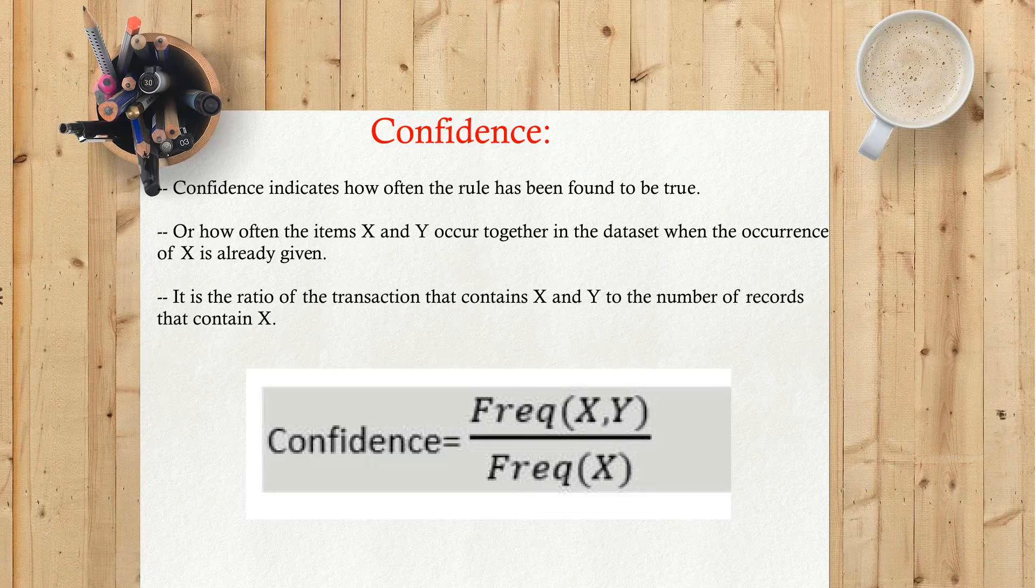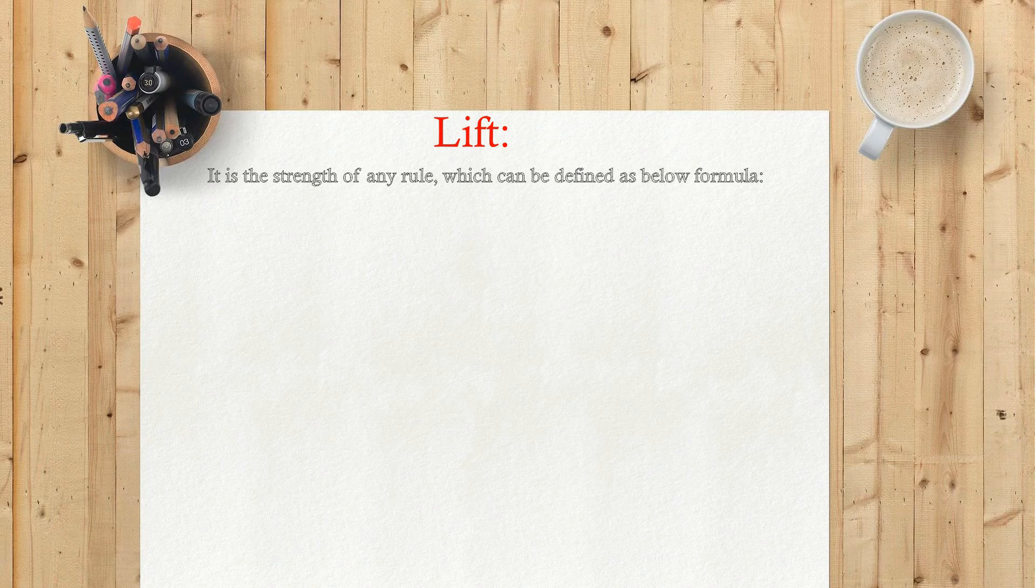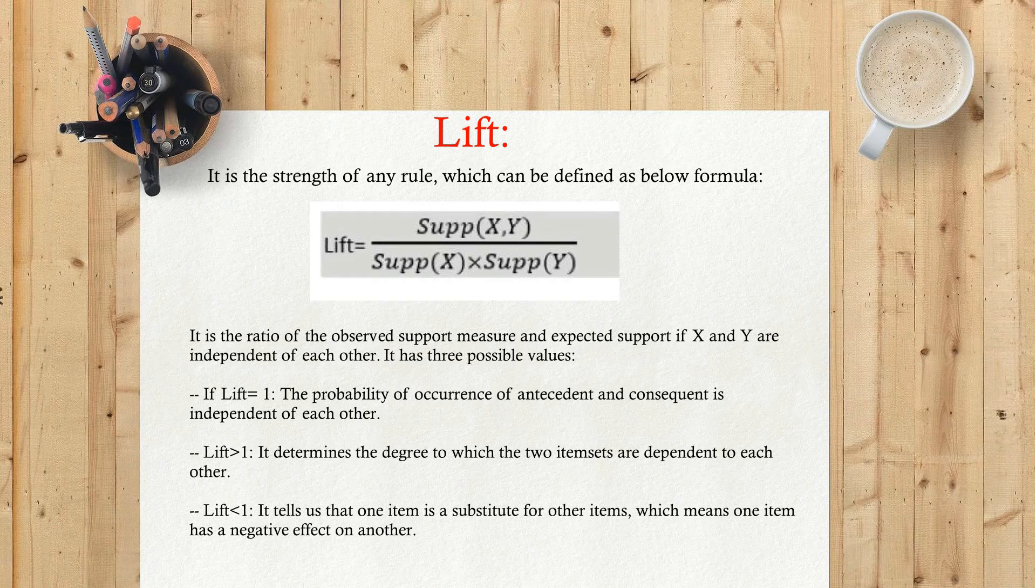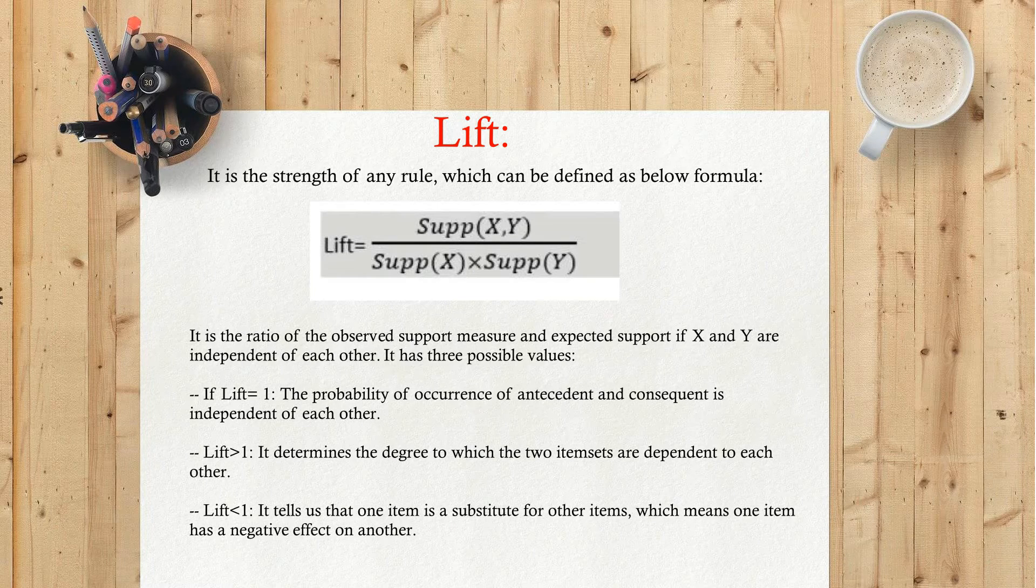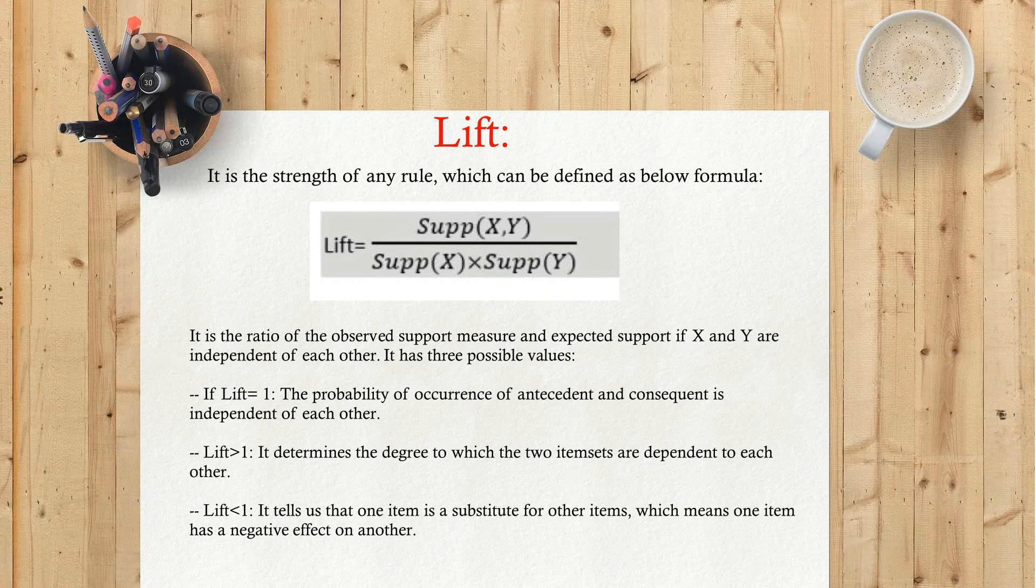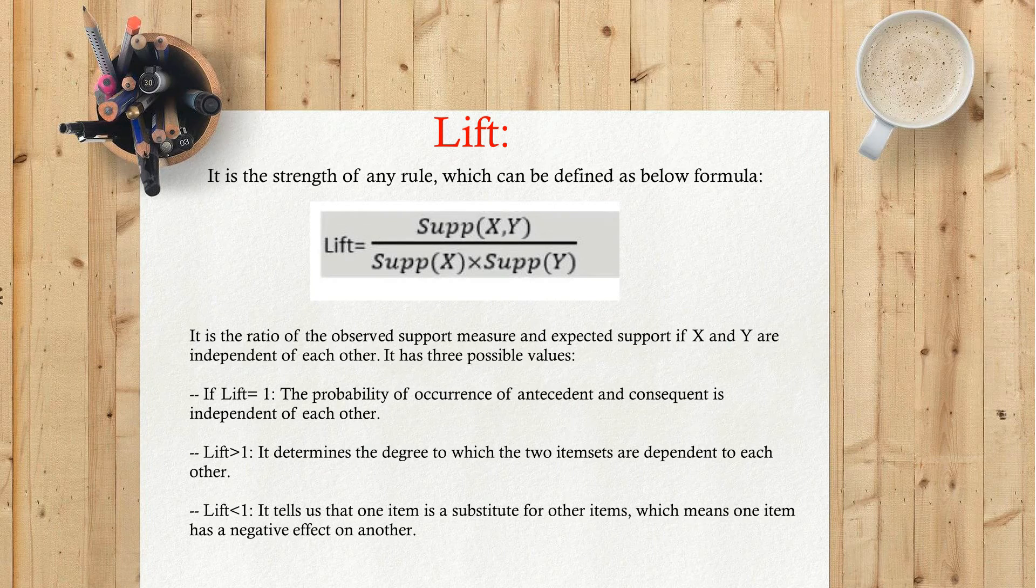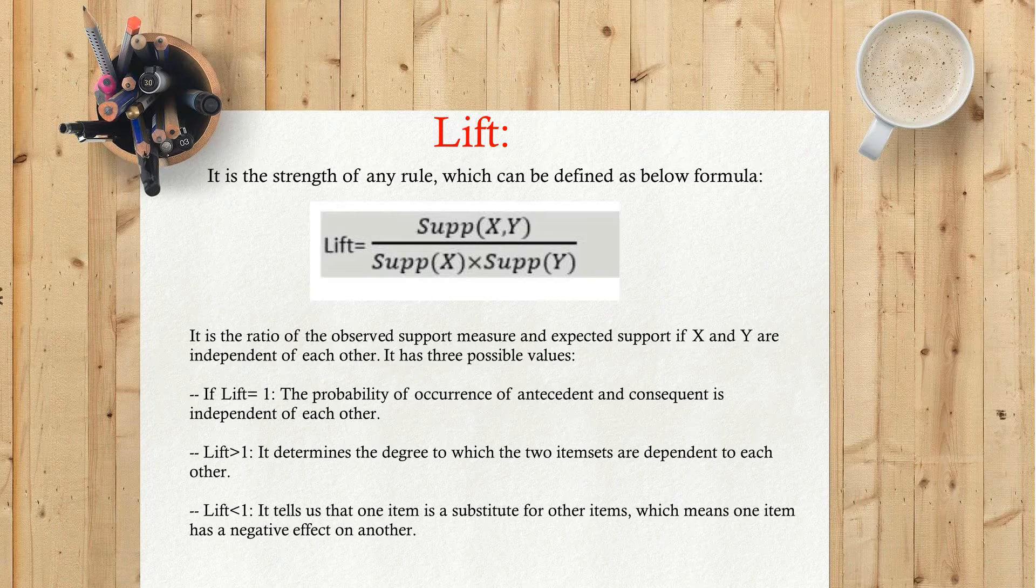Lift: Lift is the strength of any rule which can be defined as below formula. It is the ratio of the observed support measure and expected support if X and Y are independent of each other. It has three possible values. If lift equals one, the probability of occurrence of antecedent and consequent is independent of each other. Lift greater than one determines the degree to which the two item sets are dependent on each other.